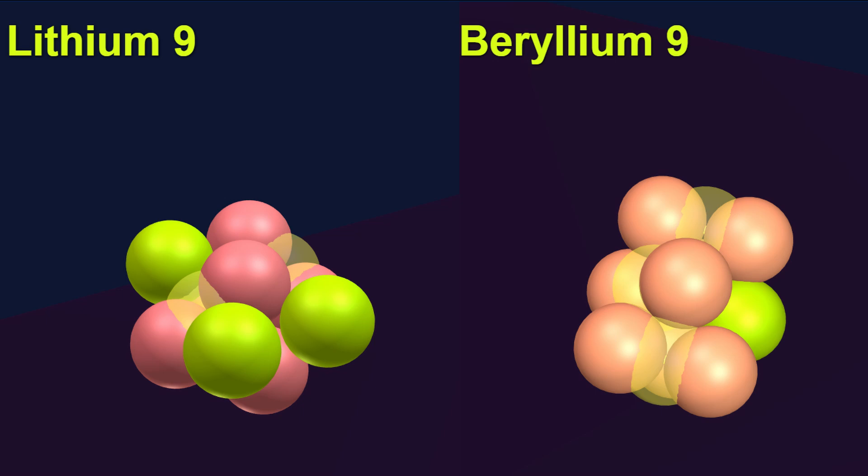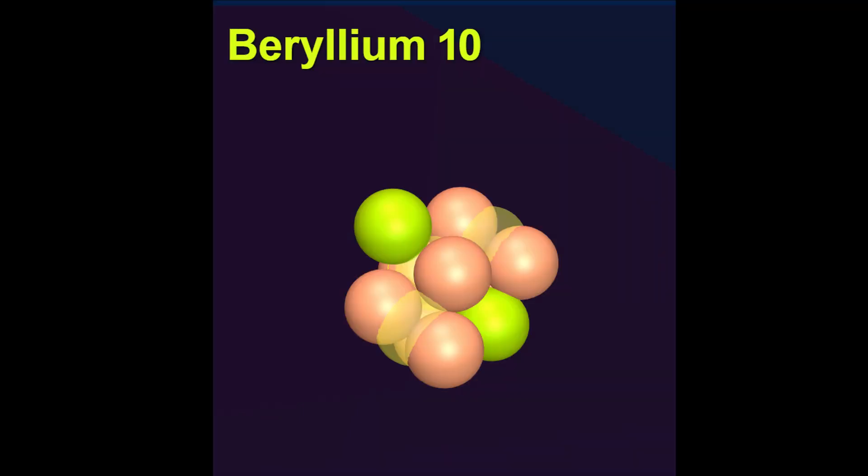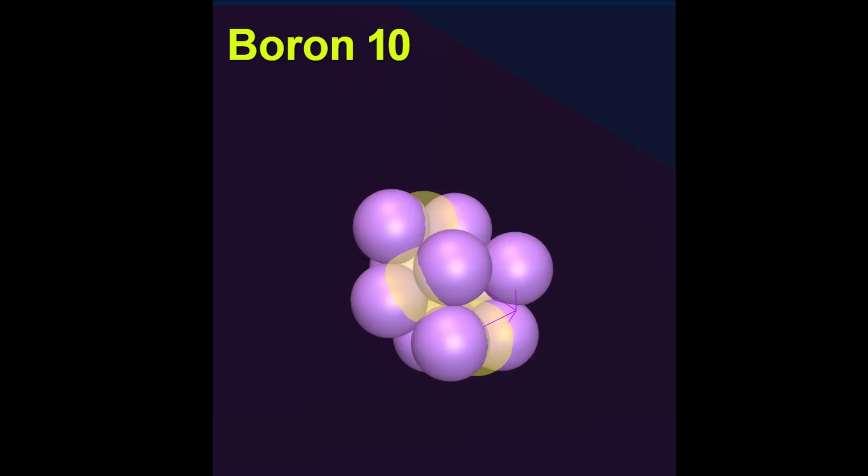Although both of these structures are stable, beryllium has an additional inner electron which makes this structure stronger and more stable. Adding an additional sphere now gets us to beryllium 10 which decays to boron 10 for the same reasons that we discussed with lithium 9.